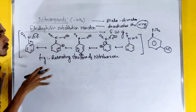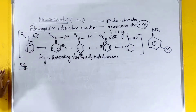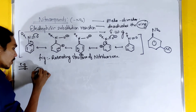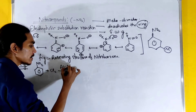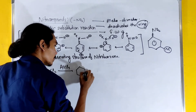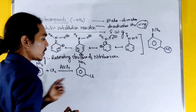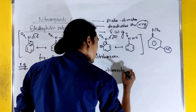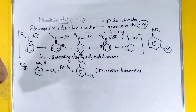Now let's start an example. First, we can do halogenation — specifically chlorination. Nitrobenzene reacts with chlorine (Cl2) in the presence of AlCl3. The NO2 group directs chlorine to the meta position, giving meta-chloronitrobenzene.